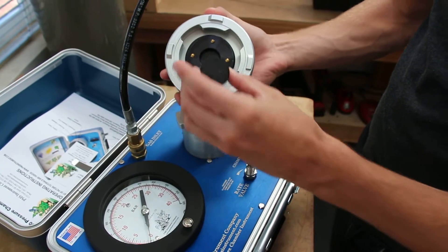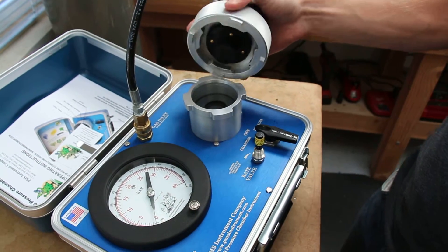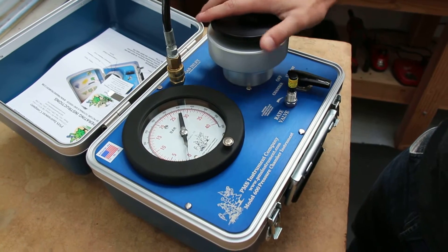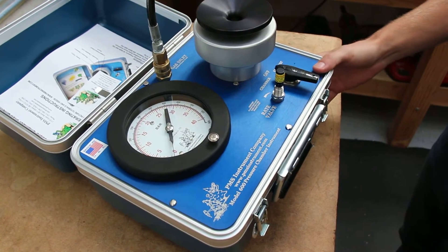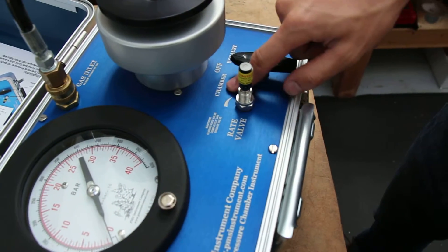You can also seal the chamber by inserting a sample into the compression lane gasket. Now take and put the control valve to the chamber position, which begins to increase the flow of pressure into the chamber.